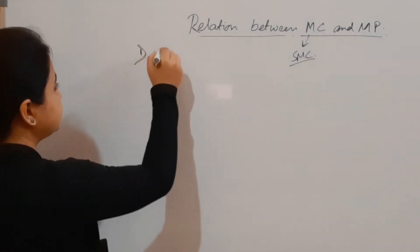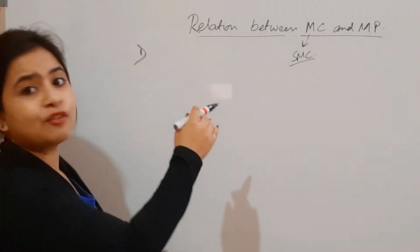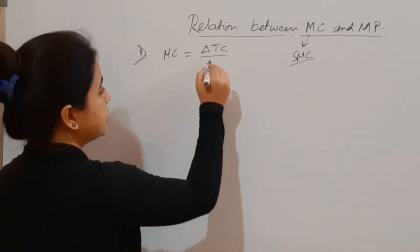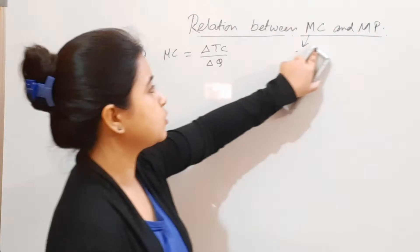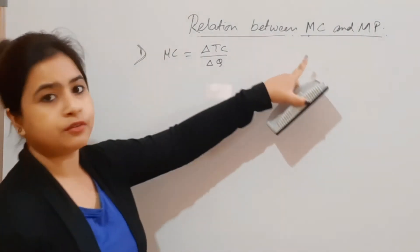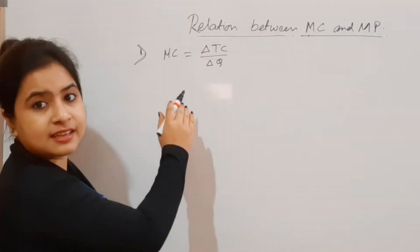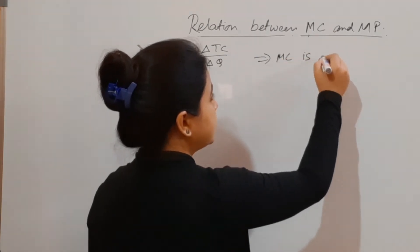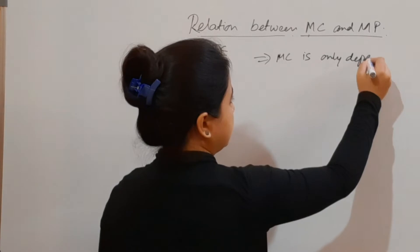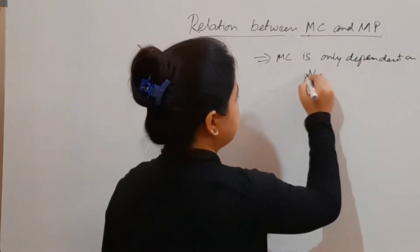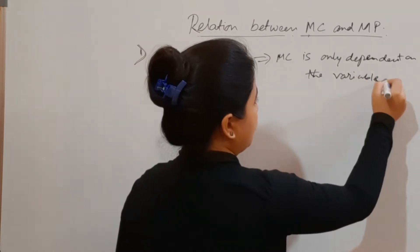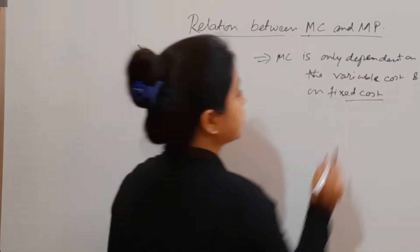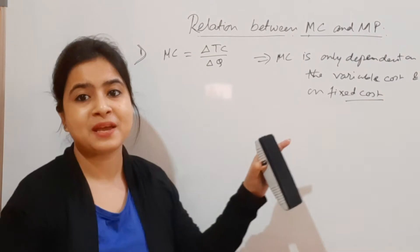Number one: you have to remember the definition of marginal cost. Marginal cost is the change in total cost divided by change in output — this is the short-run marginal cost. Importantly, marginal cost is only dependent on the variable cost and not on the fixed cost.